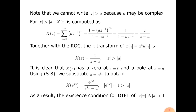Applying the geometric series formula: x(z) = (1 − (a·z^(−1))^∞) / (1 − a·z^(−1)) = 1/(1 − a·z^(−1)) = z/(z − a). So the Z-transform of a^n · u(n) is x(z) = z/(z−a), with ROC |z| > |a|. It is clear that x(z) has a zero at z = 0, and a pole at z = a. Substituting z = e^(jω) gives x(e^(jω)) = e^(jω) / (e^(jω) − a).